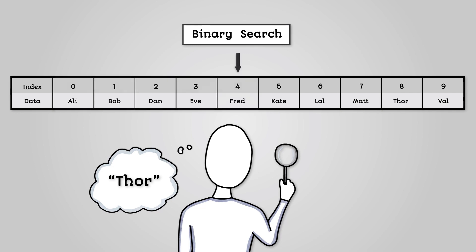We then keep repeating this process of checking until we find our value. Step 1 Thor is above Fred. Step 2 Thor is above Matt. Step 3 Thor is below Val. And Step 4 Thor has been found.